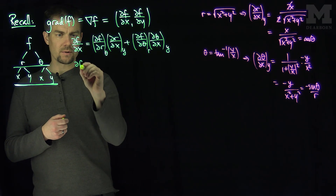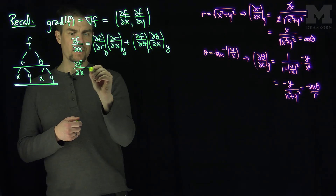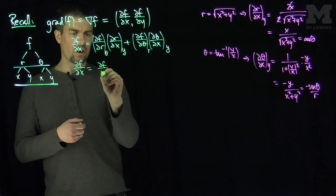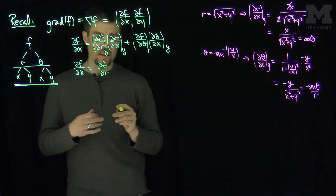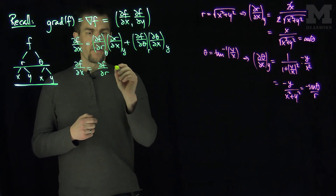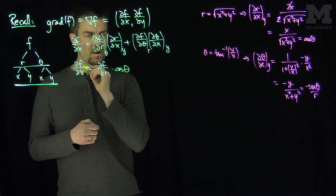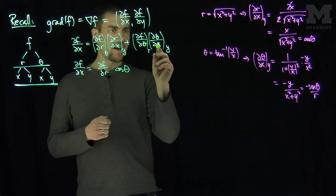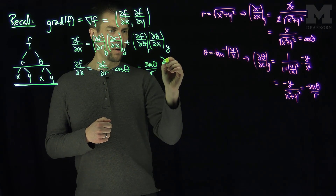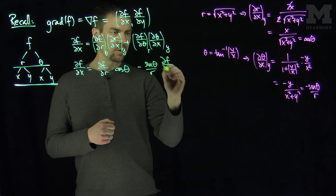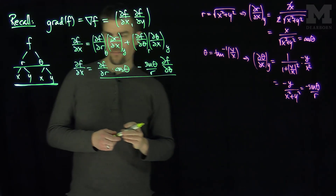Substituting back, ∂f/∂x = (∂f/∂r) cos θ + (∂f/∂θ)(−sin θ / r). That is the x-derivative expressed in terms of polar coordinate partial derivatives.